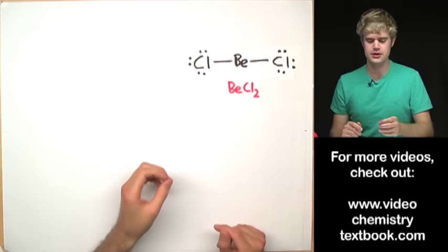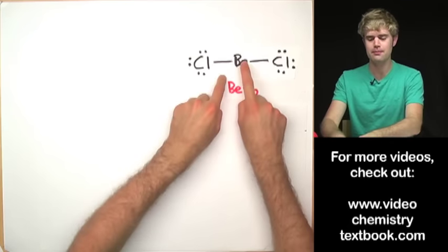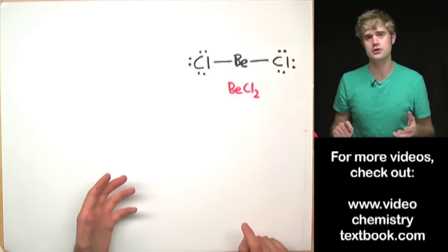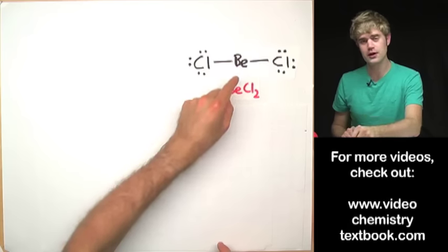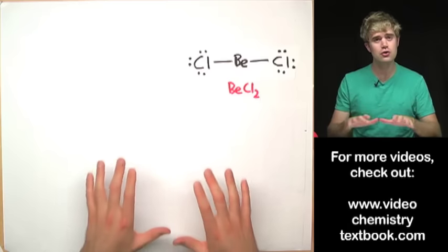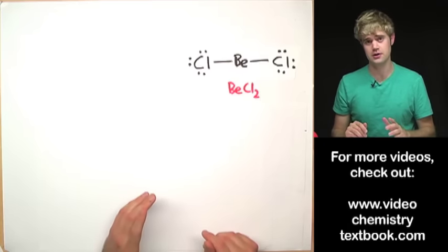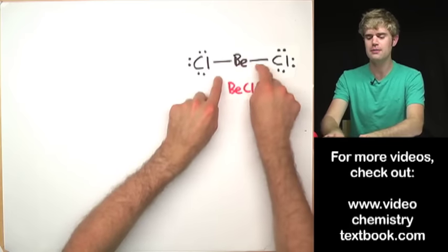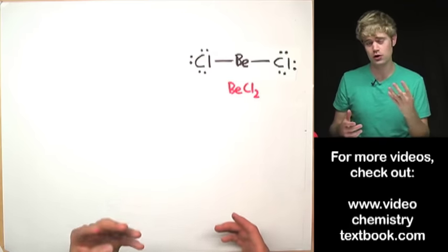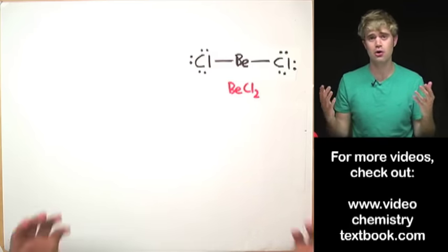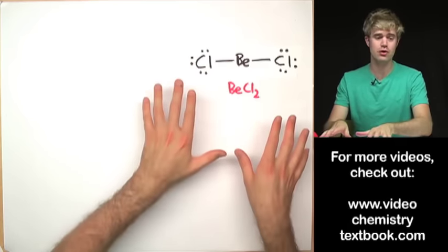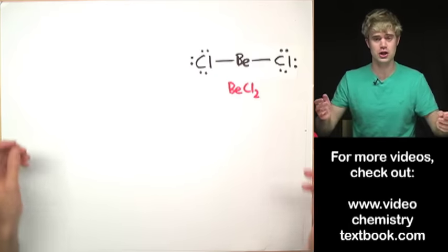Here's our first example: beryllium dichloride. We have a beryllium atom as the central atom surrounded by chlorines on either side. Note that beryllium is an exception to the octet rule, which means it's happy to have fewer than eight electrons in its valence shell. When beryllium makes two bonds like it does here with chlorine, it has only four electrons in its valence shell and it's perfectly happy with that. This doesn't have any important bearing on what the VSEPR shape is.